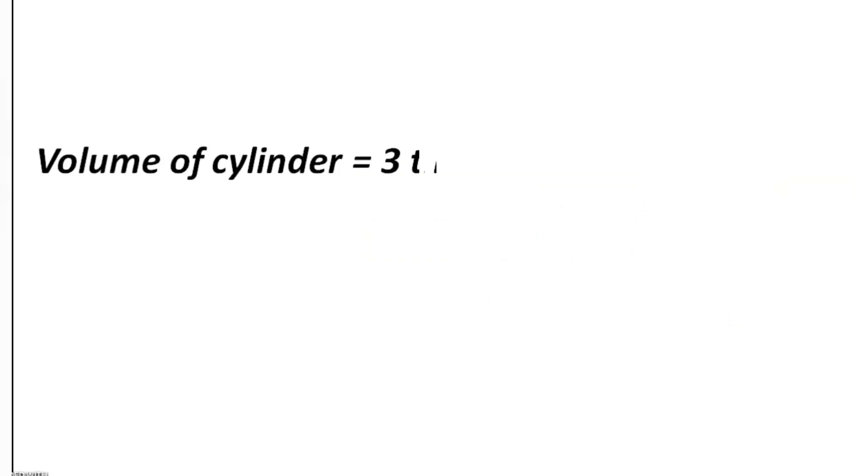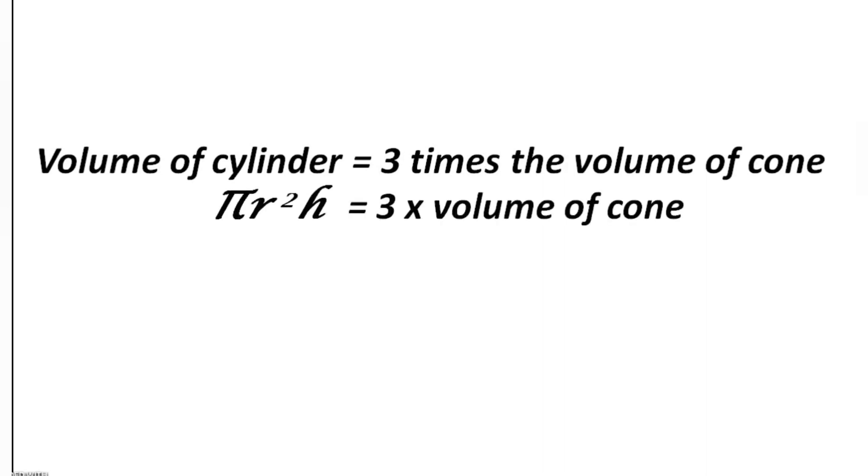We know that the cylinder volume is πr²h. Therefore, πr²h equals three times the volume of the cone. So we can write the volume of the cone as one-third πr²h, which is one-third of the volume of the cylinder.